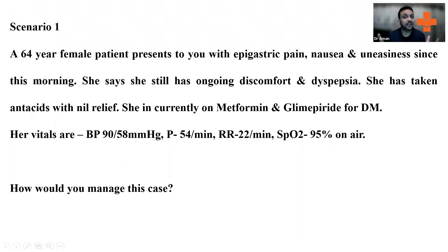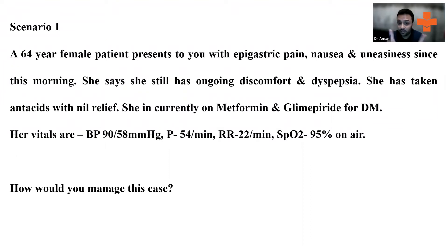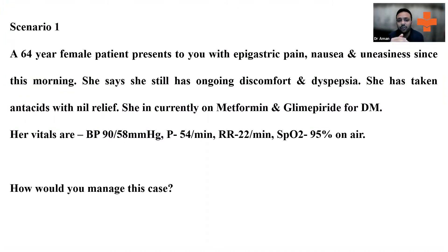Follow the ABCDE approach. The patient is talking, so the airway is patent. Sats look fine and the breathing rate is okay. Moving to circulatory parameters, something is wrong with the circulation. Get an IV line in, take bloods, and make sure you check troponins — the most specific cardiac enzyme. Use whatever cardiac enzyme your institution recommends.